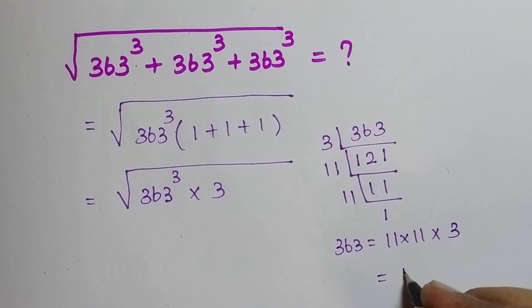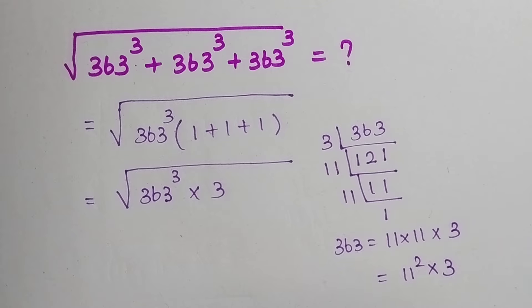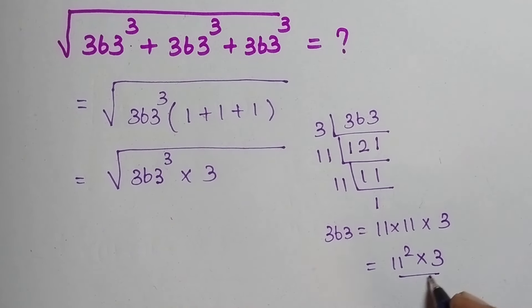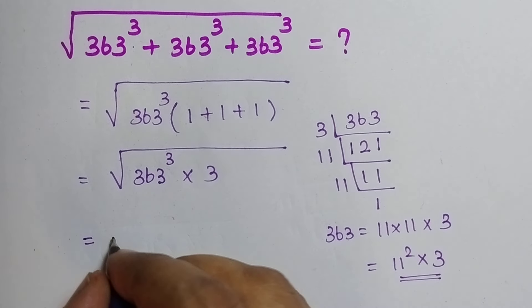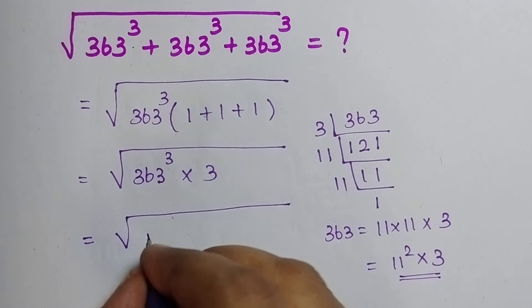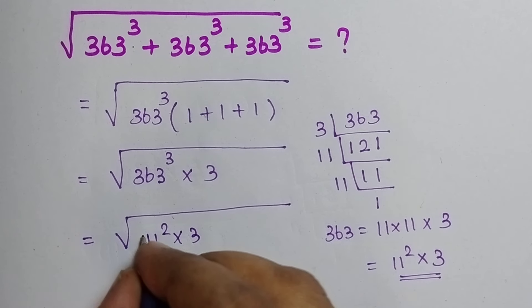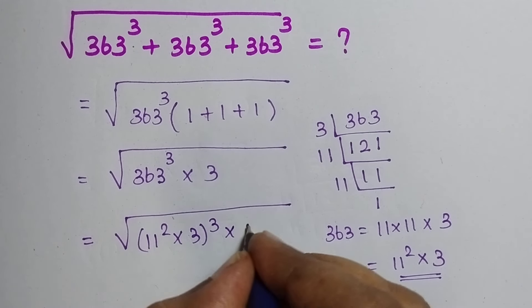And this can be written as 11 square into 3. So, just substitute this in the place of this 363, which is equal to the square root of 11 square into 3 the whole cube into 3.